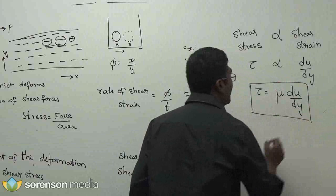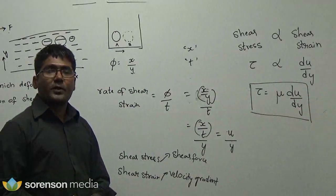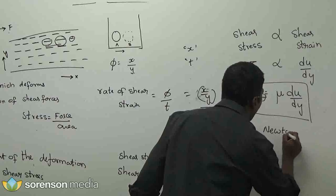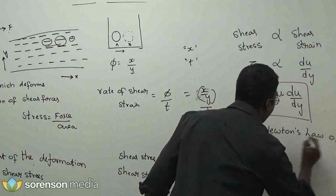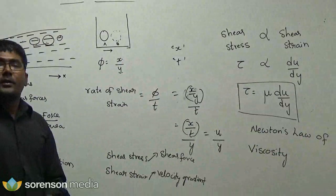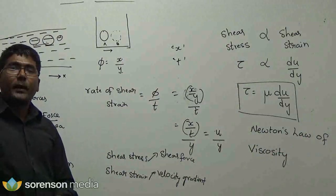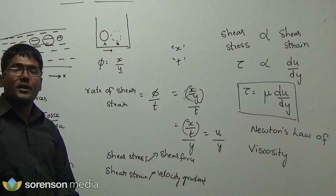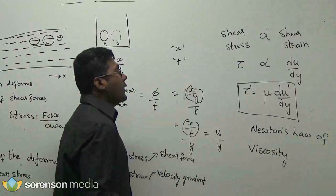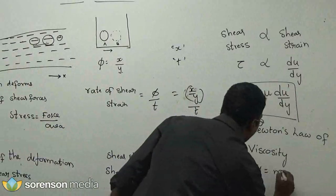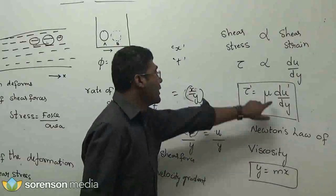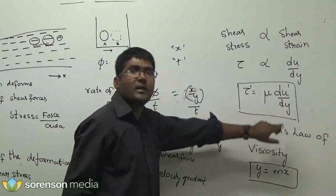This linear relationship is what we call Newton's law of viscosity. It tells you that shear stress is directly proportional to the shear strain, giving you a linear relationship between shear stress and shear strain. Mathematically, shear stress is to the power of 1 and velocity gradient to the power of 1, so you can assume it to be of the y = mx form. When you plot shear stress versus shear strain, the slope would be viscosity.